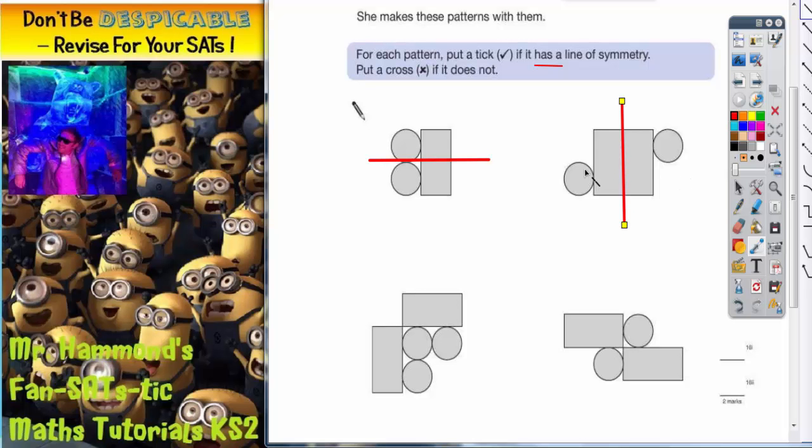On one side of the mirror the circle's at the bottom. On the other side it's at the top. So that cannot be a line of symmetry.